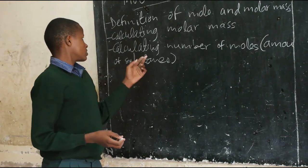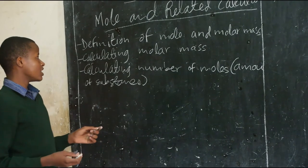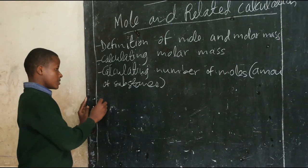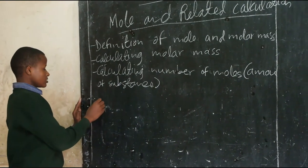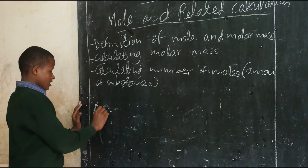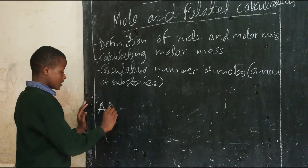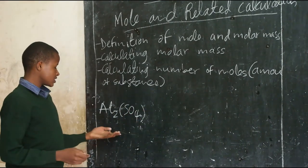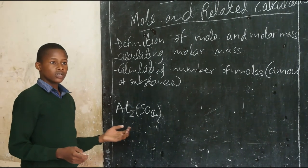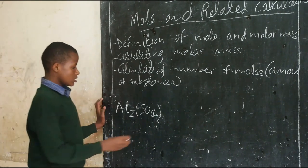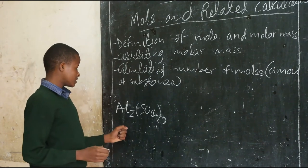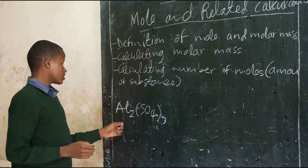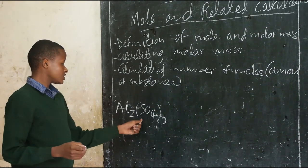Then I come to the calculation of molar mass. For the calculation of molar mass, we are going to find the molar mass of aluminium sulphate. In order to find the molar mass of this compound, you are supposed to know the atomic mass of aluminium, sulphur, and oxygen.